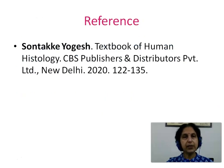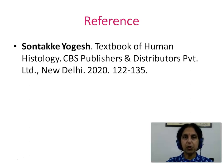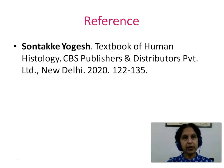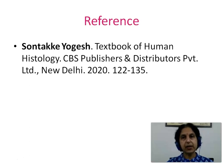Thus we have seen the general features of the histology of nervous tissue. We saw the classification of the nervous system, the structure of the neuron, the structure of all the neuroglial cells, and the process of myelination. For further reference, you can read Yogesh Sontakke, Textbook of Human Histology, CBS Publishers and Distributors Private Limited, New Delhi, 2020, page numbers 122–135. Thank you.